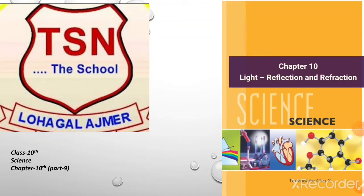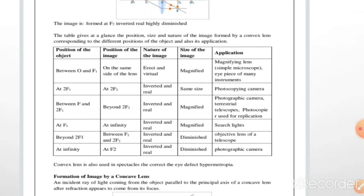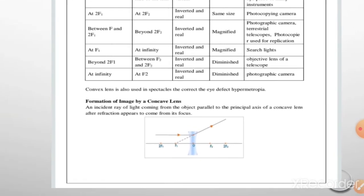Good morning to all. I am from TSN Day School and today I am going to explain Class 10 Science Lesson 10 - Light Reflection and Refraction. It is the 9th part of this chapter. In my previous video, I explained the image created by convex lenses - position of the image, nature of the image, size of the image and the application of the convex lens. उस topic को हमने अच्छी तरीके से समझा था.